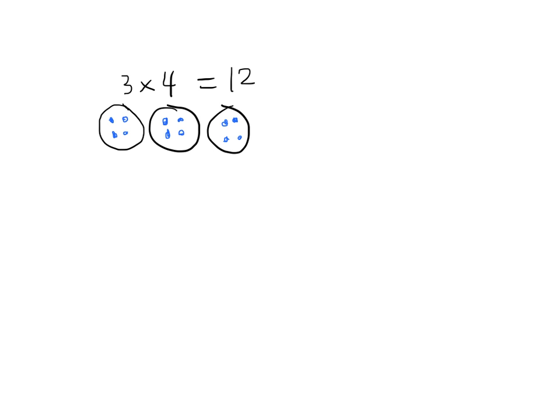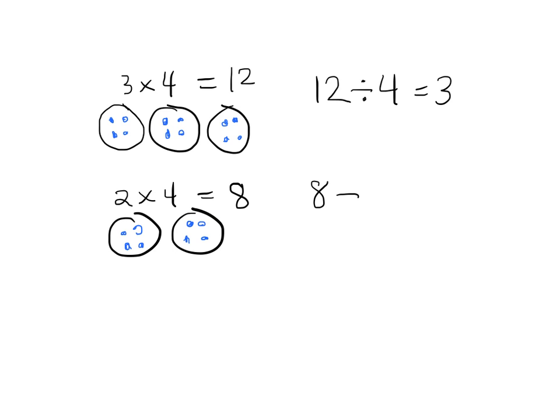If we wanted to we could write that as 12 divided by 4 equals 3. Now we can change that to 2 groups of 4. 2 groups of 4 equals 8, and we can change that into a division problem by writing 8 divided by 4 equals 2.